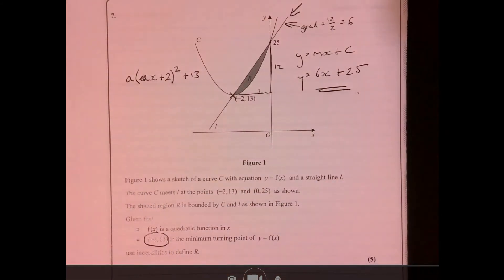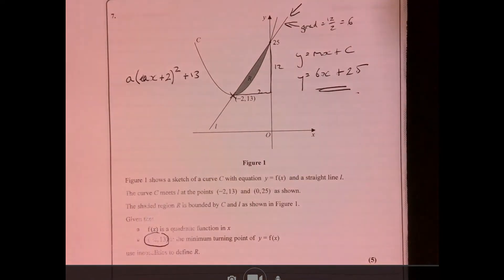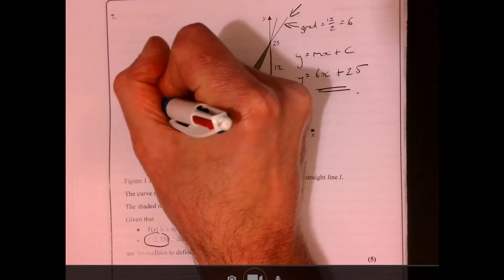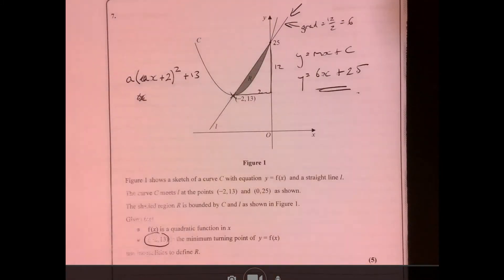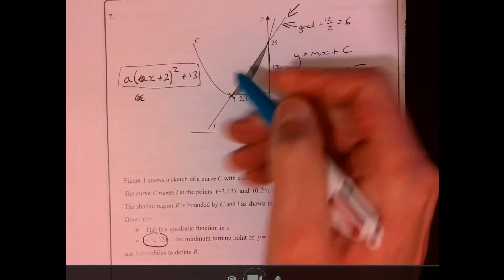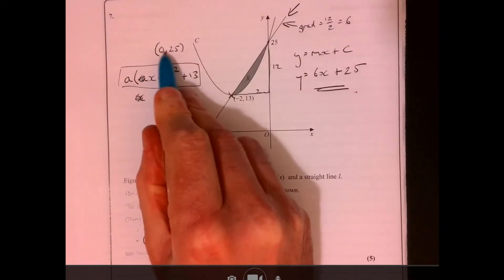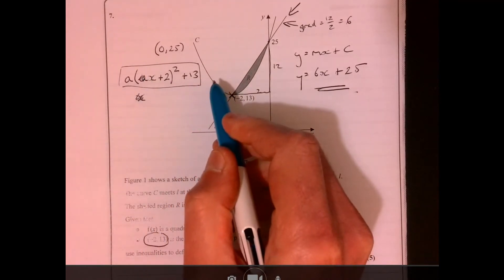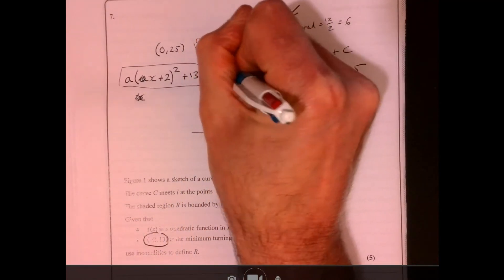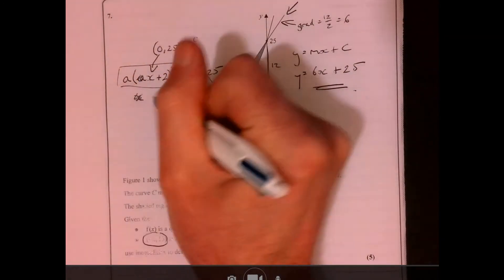So what we can do now is we need to work out what this figure is just here. Well, easiest way to do that is, in fact, easier solution: we know two points it goes through. Let's think about that: zero, 25. If I put zero into here the answer is equal to 25.